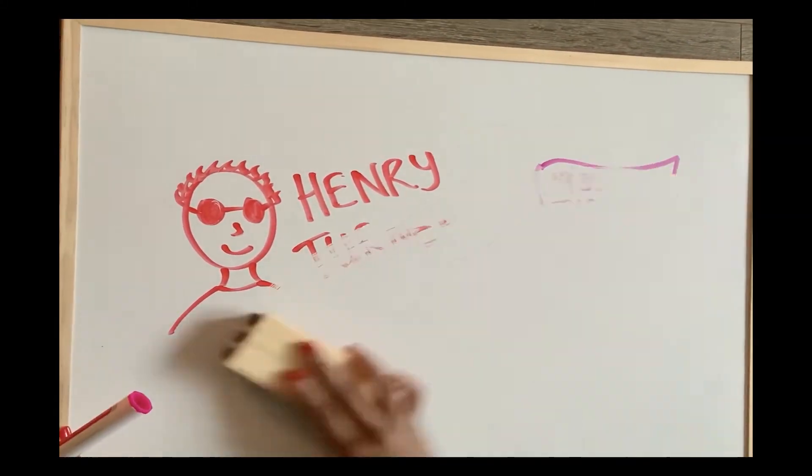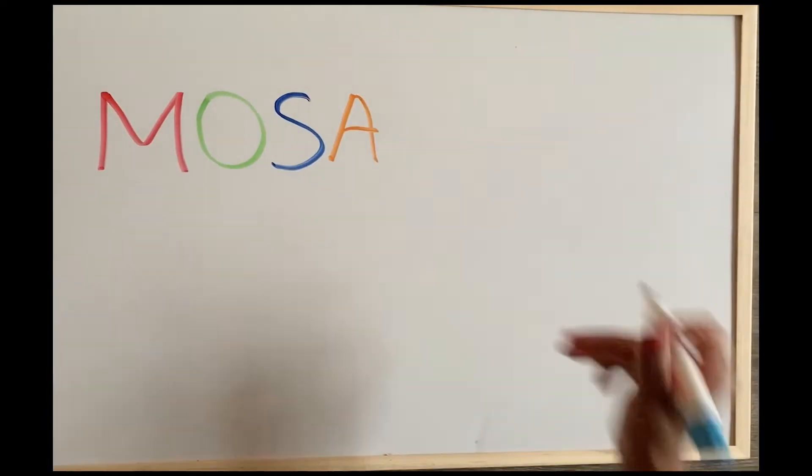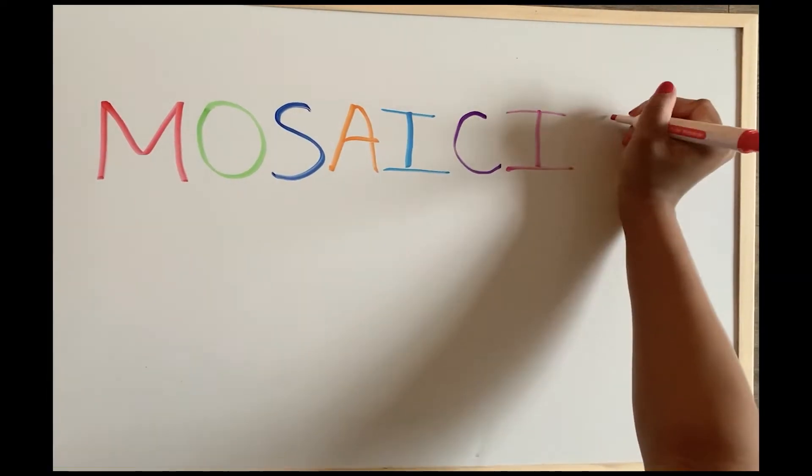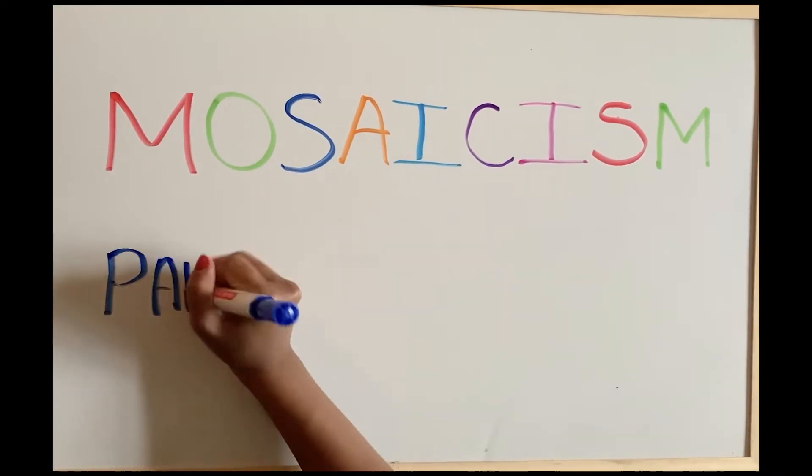In addition to non-disjunction during meiosis, Turner syndrome can also develop in two other ways, which are mosaicism and partial X chromosomes.